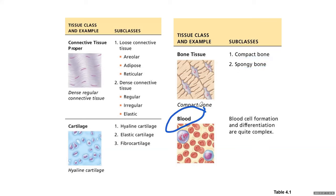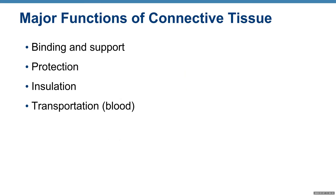An example of fluid connective tissue is blood. Blood cell formation and differentiation are quite complex and will be discussed in future lectures. Major functions of connective tissue include binding and support, protection, insulation, and transportation. Because one example of connective tissue is blood, and the function of blood is to transport nutrients, oxygen, and waste products to and from your cells to your excretory organs.